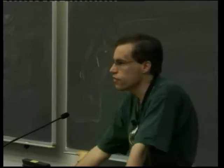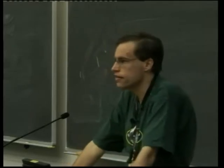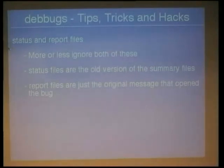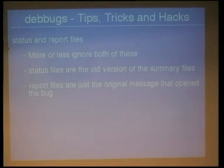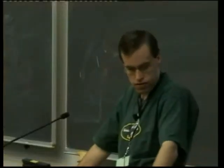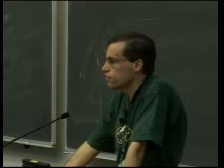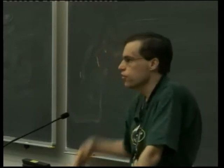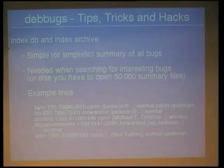The two other files per bug are the status and the report. The status is out of date and hopefully not really used anymore — it just contains redundant information from the summary file now. The report file basically just has the original bug report email that opened the bug, and it's just used so that the original email can be included in the done message.